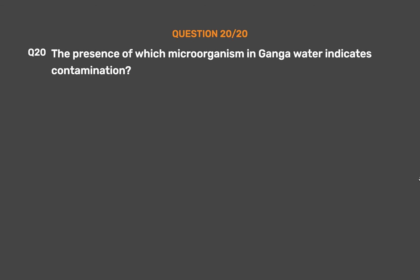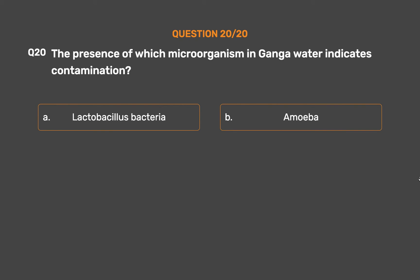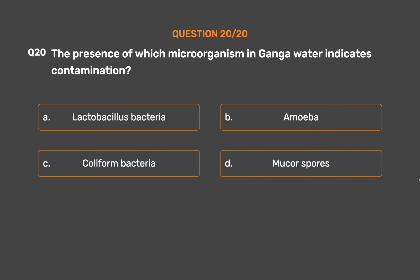Question number 20. The presence of which microorganism in Ganga water indicates contamination? Option A: Lactobacillus bacteria. Option B: Amoeba. Option C: Coliform bacteria. Option D: Mucus spas.